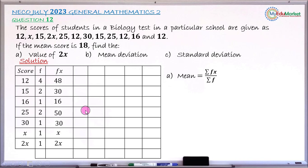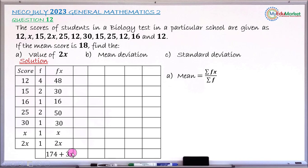Adding all the FX values together and collecting like terms: 48 + 30 + 16 + 50 + 30 + X + 2X gives ΣFX = 174 + 3X. Similarly, adding all the frequencies gives ΣF = 12.